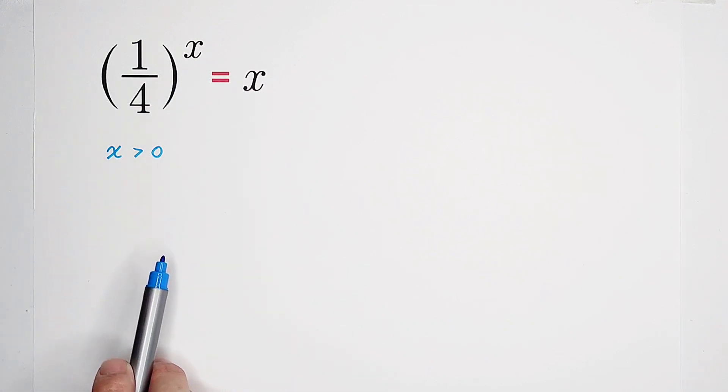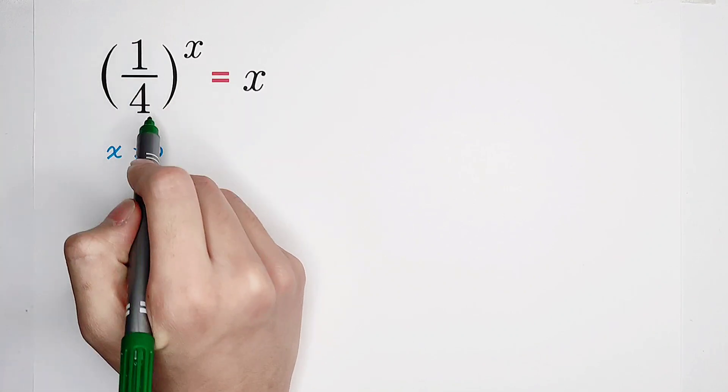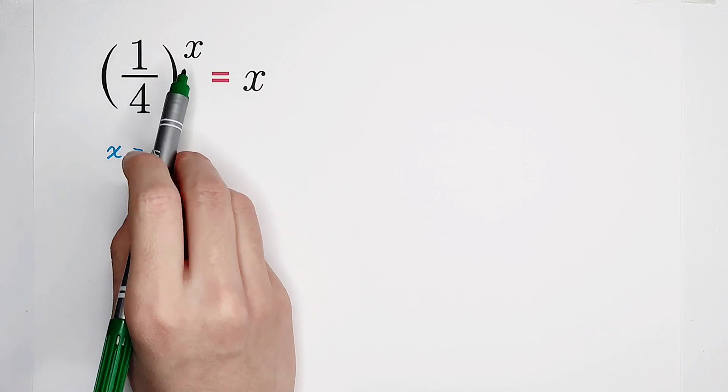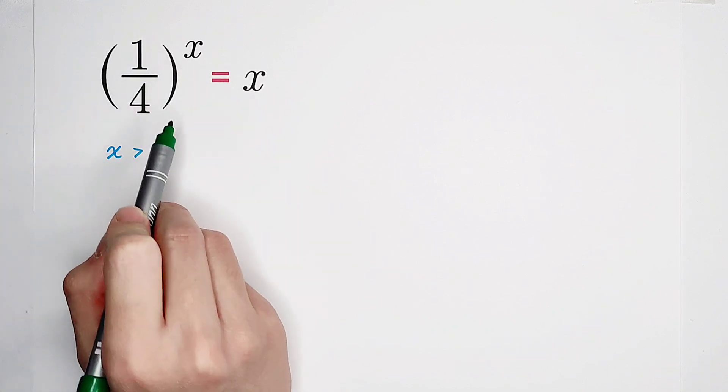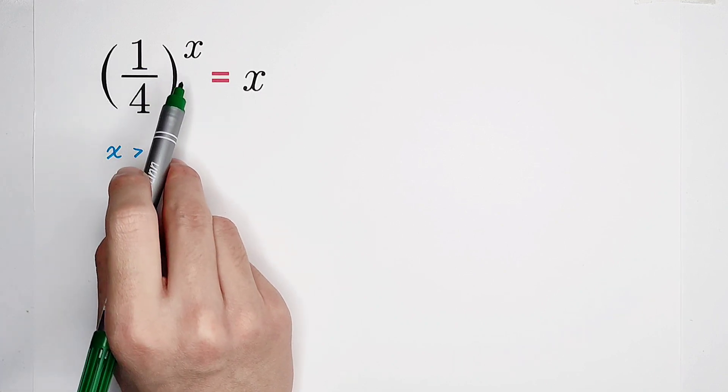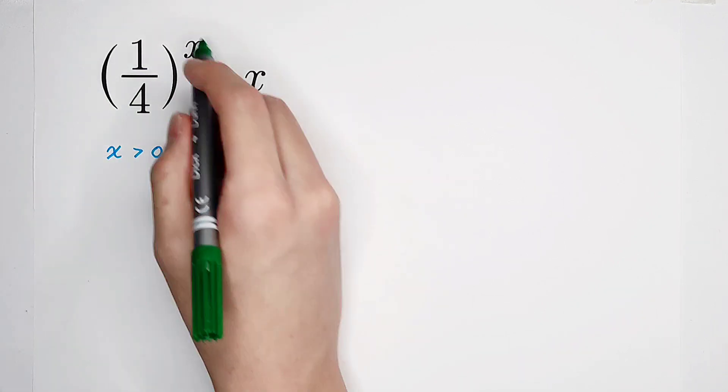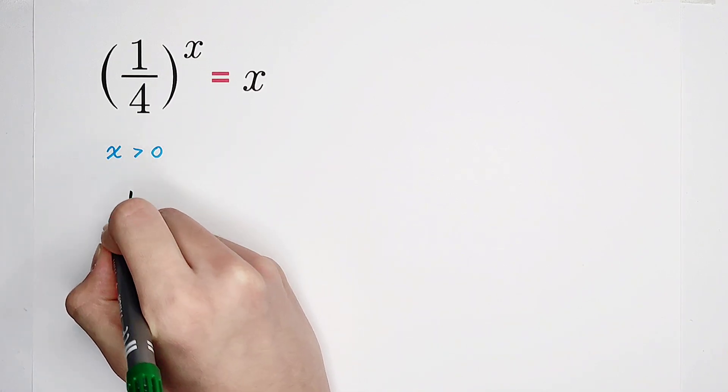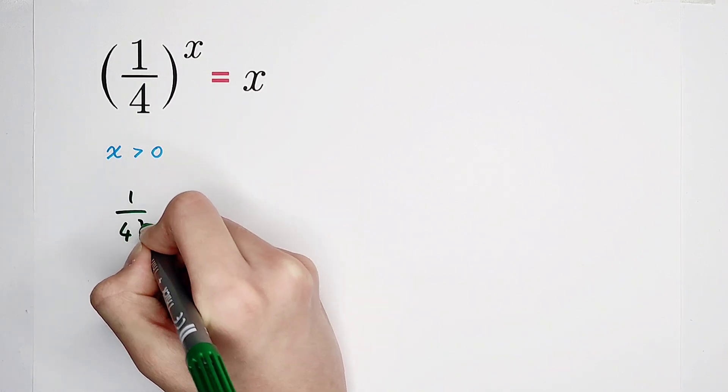So then, what shall we do? Do this. One over four to the power of x, it is of course equal to one to the power of x over four to the power of x. But we know that one to the power of anything is equal to one. So the left-hand side can be written as one over four to the power of x.